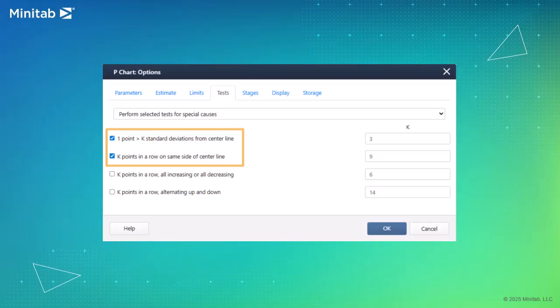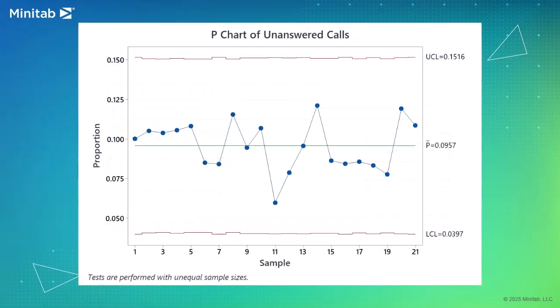Select OK in each dialog. The chart shows that, on average, 9.57% of calls are unanswered. None of the subgroup proportions are outside of the control limits. The points inside the limits display a random pattern. This P-Chart does not provide any evidence for lack of control.